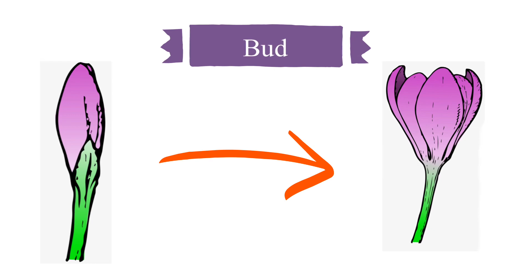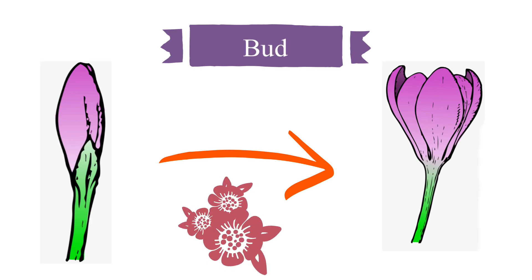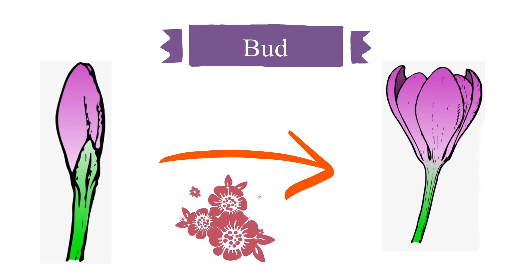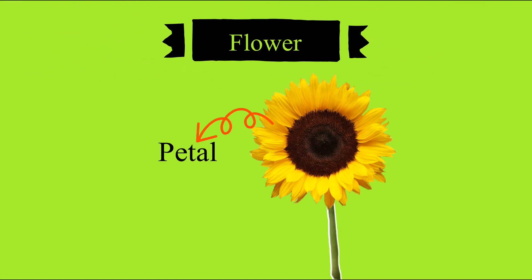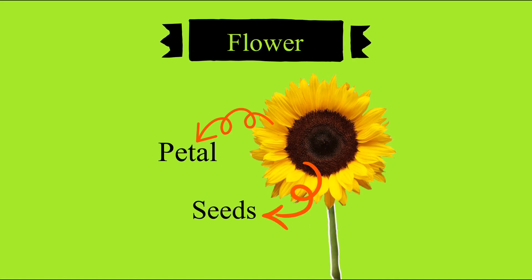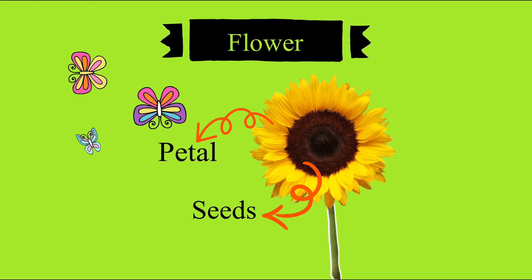After a few days the flower blooms. The flower has petals which are colorful. Flowers also have seeds in them, which we can use to grow more plants.